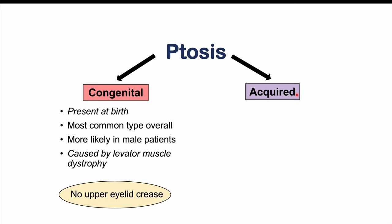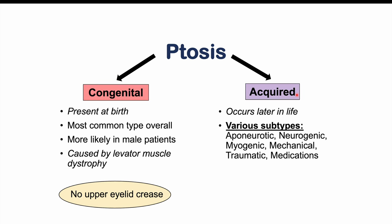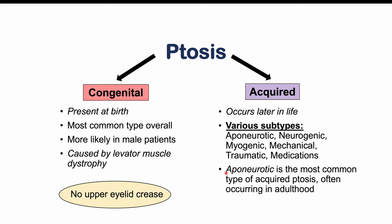Acquired ptosis is not present at birth but occurs later in life. There are various subtypes: aponeurotic, neurogenic, myogenic, mechanical, traumatic, and medication-induced ptosis. Aponeurotic is the most common type of acquired ptosis, often occurring in adulthood and late life.